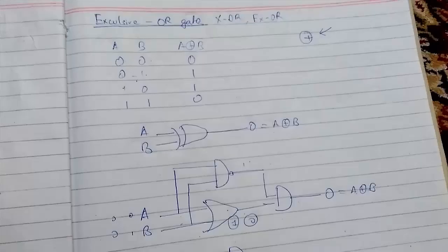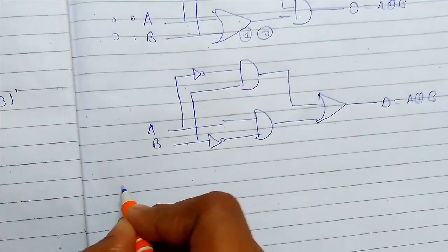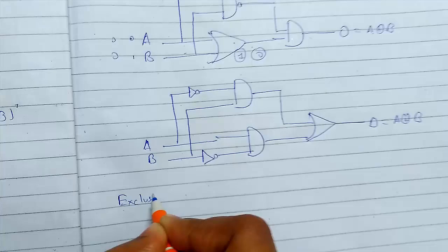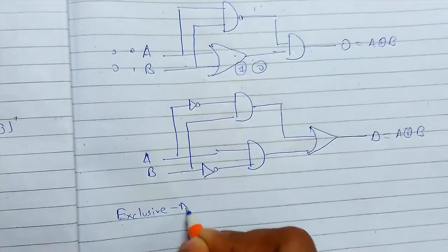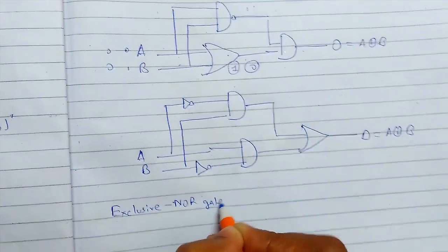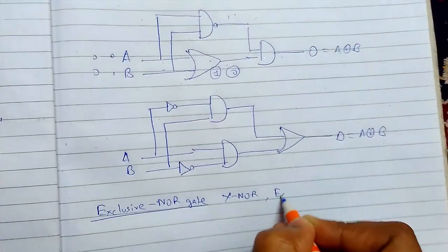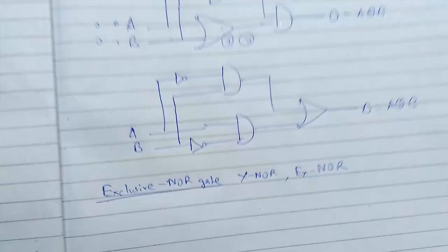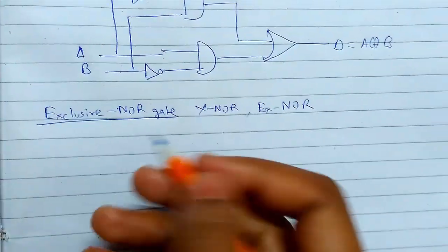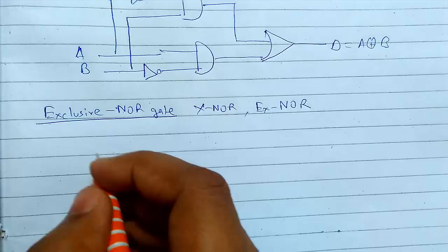I hope you understood the XOR gate. Now the next gate is exclusive NOR gate, or XNOR gate, or X-NOR gate. You can write any of these. This is the last gate we'll analyze.